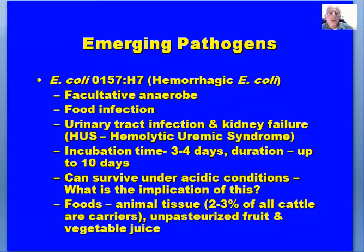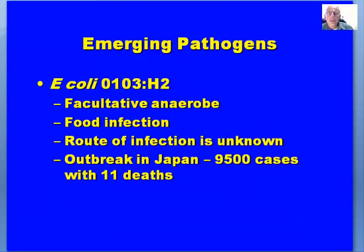E. coli O157:H7 is a facultative anaerobe that causes food infection. One of the major concerns is hemolytic uremic syndrome. The incubation time is three to four days and duration can be up to 10 days. An important characteristic is that it can survive — though may not grow — under acidic conditions. The implication of this as it relates to food processing and preservation is a question worth considering. Foods implicated include animal tissue, unpasteurized fruit and vegetable juices, and more recently fresh fruits and vegetables.